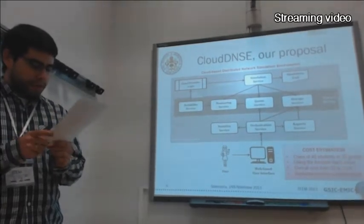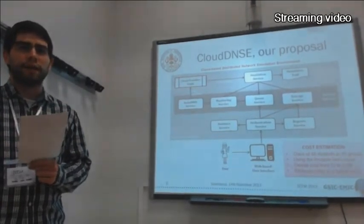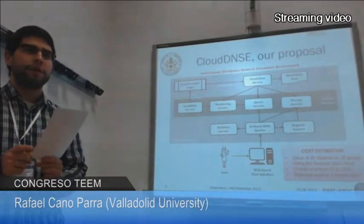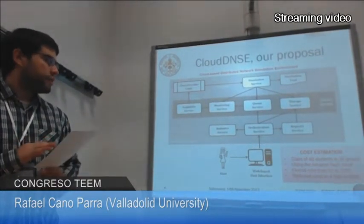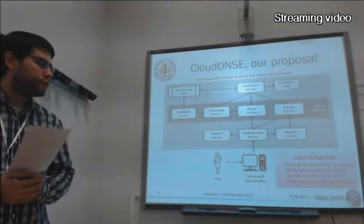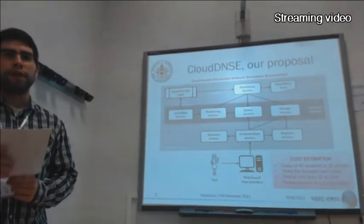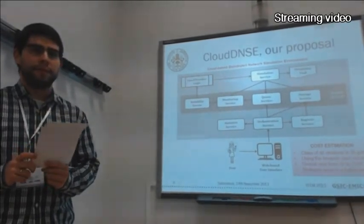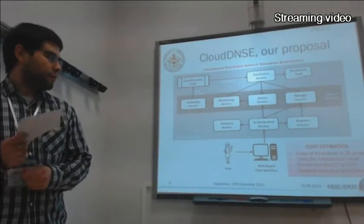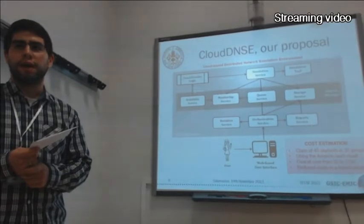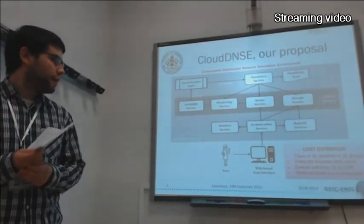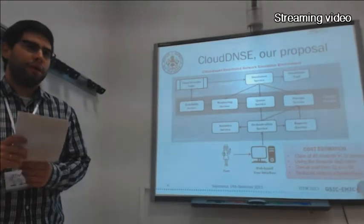Using this SaaS application for the scenario described at the beginning of the presentation — a class of 40 students divided into groups of two — and using an Amazon EC2 cloud, the cost estimation could be between 32 and 210 euros depending on the price of virtual instances at that moment. Furthermore, if the institution uses a hybrid cloud combining their own private cloud with a public cloud like Amazon, the cost will be further reduced.